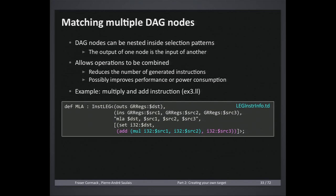Question: How long do you anticipate it would take somebody to build a backend? Response: Apparently you can do it in 24 hours according to another tutorial. It really depends on your target — a simple CPU where scheduling isn't critical could be done quickly, but an in-order processor where scheduling is critical or a target with vectors takes longer. For Leg, it was probably a couple of days.